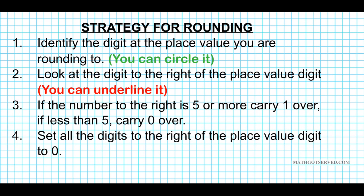Now, for that digit to the right: if it's five or more, you carry one over. If the digit is less than five — four, three, two, one — you carry zero over. After doing that, after carrying one or zero depending on the size of the number to the right of the place value digit, you're then going to set all the digits to the right of the place value digit to zero. This is the strategy we're going to be using to round numbers to a specified place value.